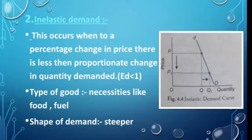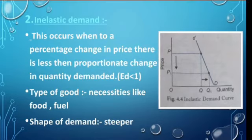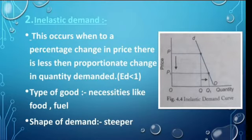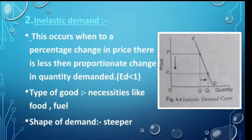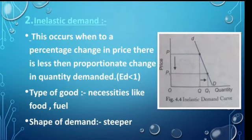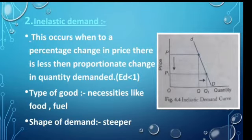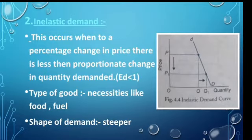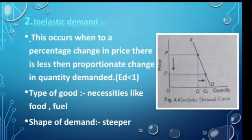Is case mein jo aapki ED yani ki elasticity of demand ke value hai, woh hoti hai aapki one se less, yani ki one se kum. Aapki yeh value zero aur one ke between rehti hai. Type of goods — isme aate hain aapke necessities goods, jo aapke bahut zaroori goods hain, woh isme aa jaate hain. Toh is case mein jo aapka demand karo hai woh steeper jayega. Jaisa ki hum dekh sakte hain: price mein zyada change aa raha hai P se P1, follow ho raha hai price, per demand mein Q se Q1 thoda sa hi change aa raha hai. Toh steeper is case mein demand karo aapka ho jayega.